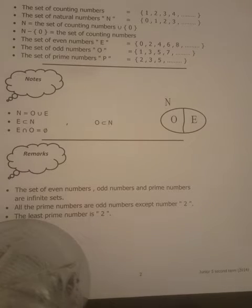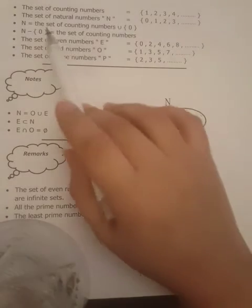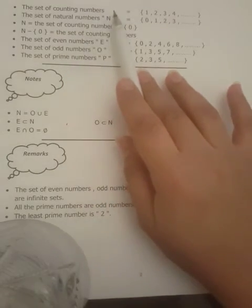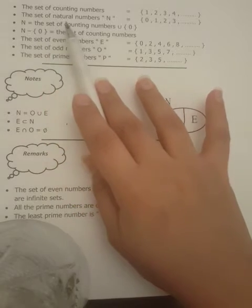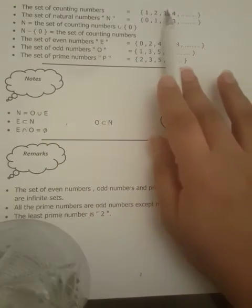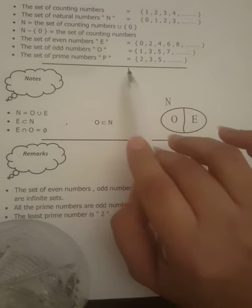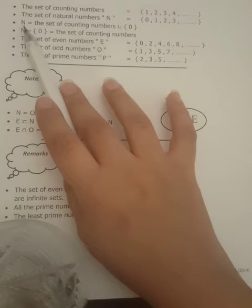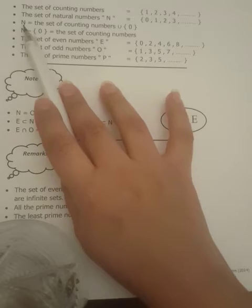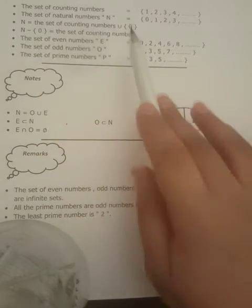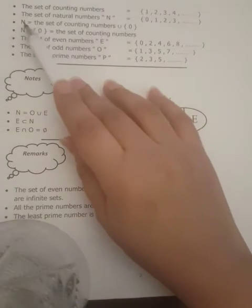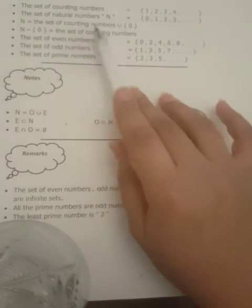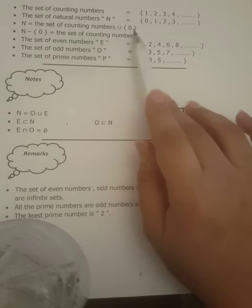First, we have to remember some sentences. The set of counting numbers — the counting numbers are 1, 2, 3, 4, and so on. And the set of natural numbers, they are the counting numbers and 0. N, which stands for the set of counting numbers, union the 0, which is the natural numbers. So N stands for natural numbers; it is the counting numbers union the set of {0}.